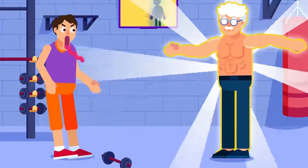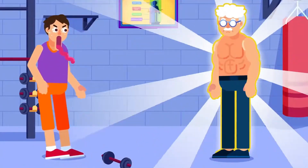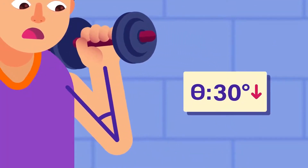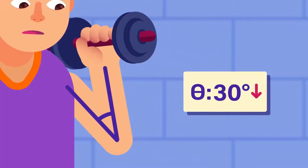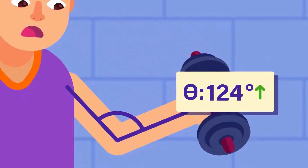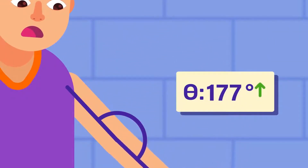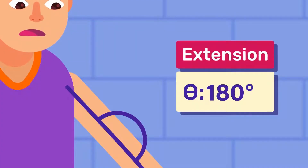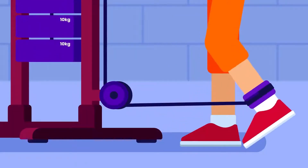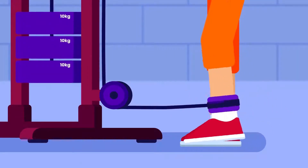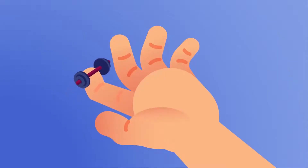Let's start off by having a look at the upper limbs first. The movement of body parts which involves bending, or a decrease in the angle between two bones in the same joint, is termed flexion. When the reverse happens — the movement causes an increase in the angle between those bones or causes a straightening effect — we call it extension. These movements are also similarly performed by the knee joint and the digits in our hands.